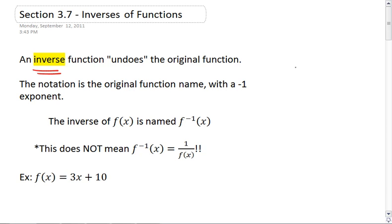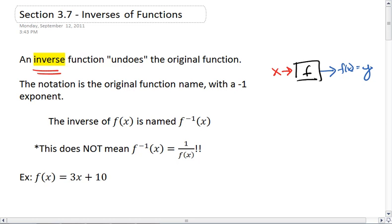We're familiar with the black box approach, where we plug in an input x and we plug into f to get the output f of x, or y. What we do with an inverse function is we take what would be the output, plug it into the inverse, and that will tell us what the input should be.